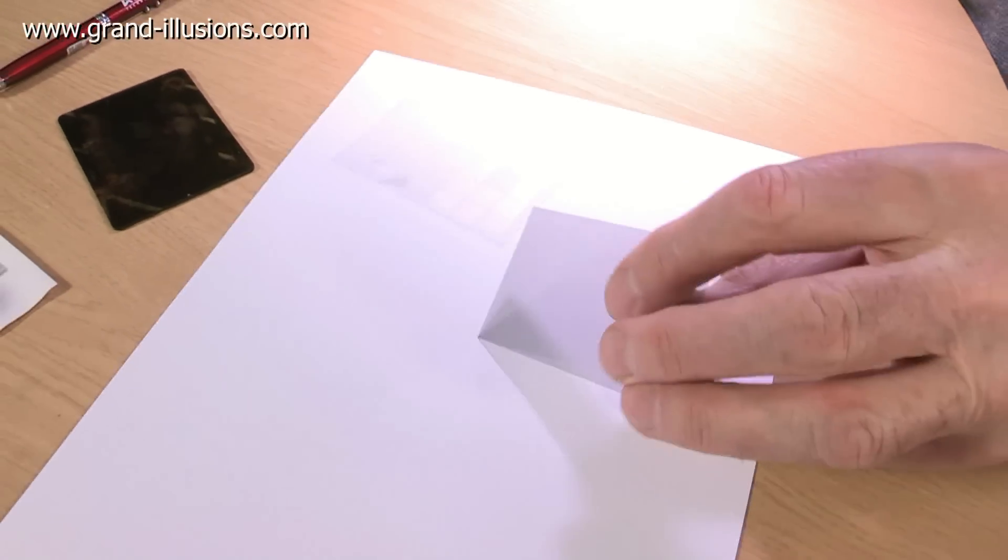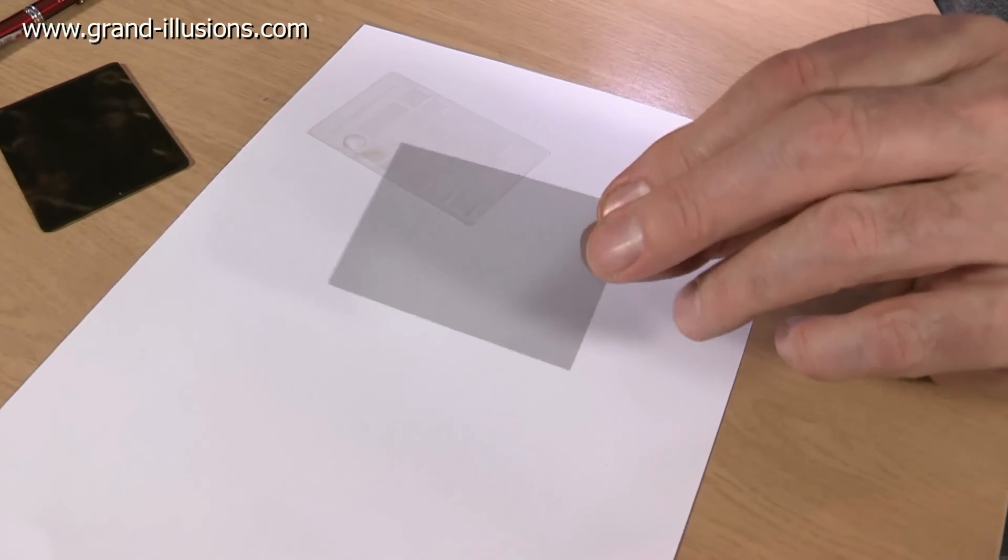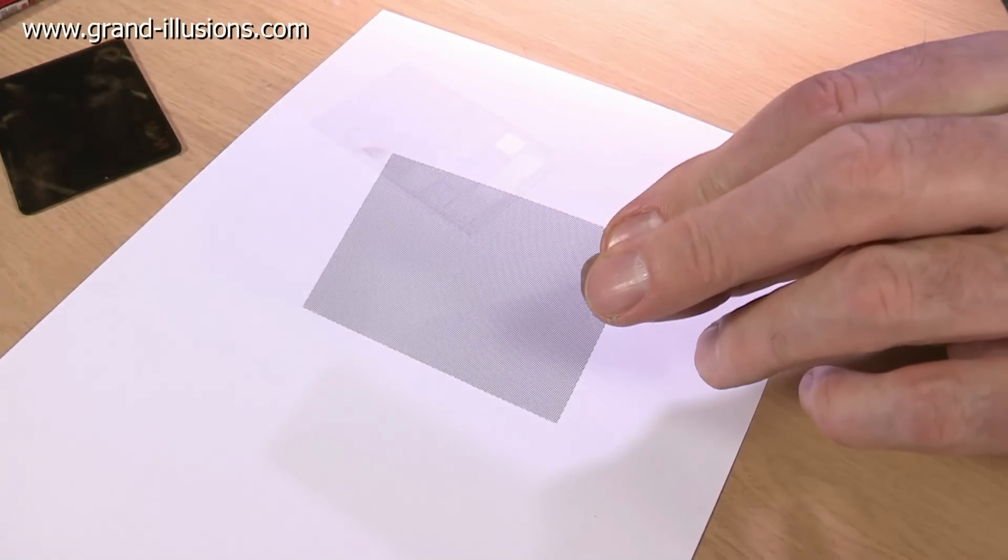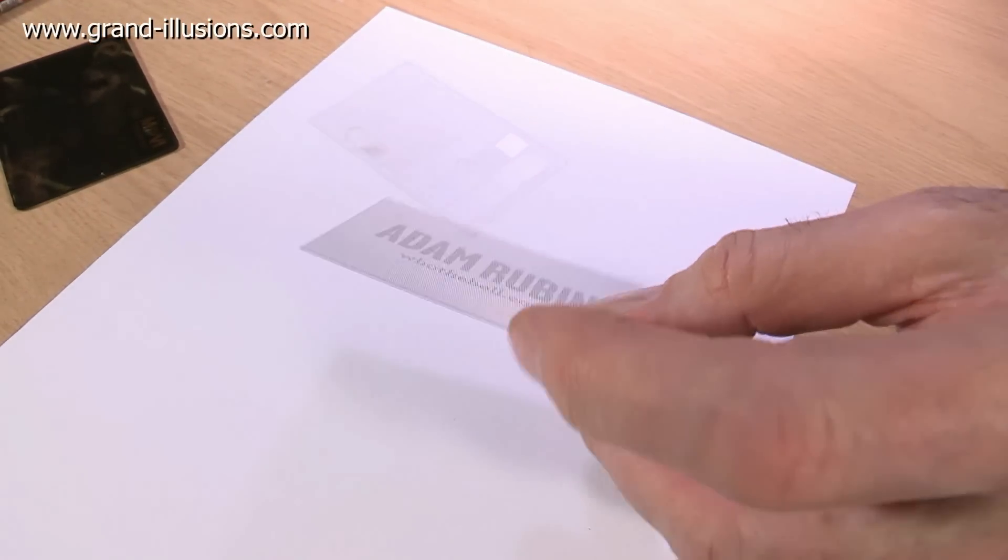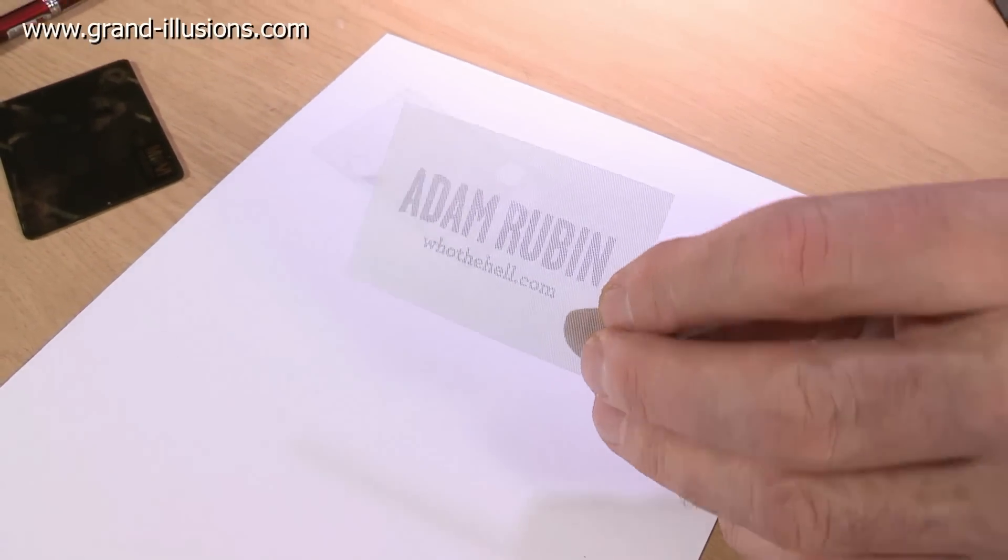Then there's a guy I met for the first time who has a business card. Blank. Blank? Well, it is blank, except when you turn it over and then you see his name appears. Extraordinary. Adam Rubin. ContraVision.